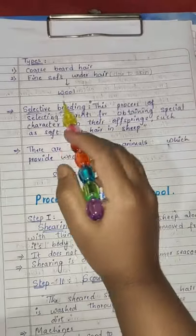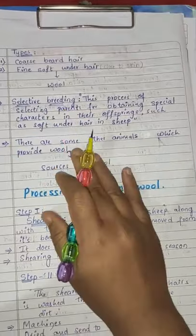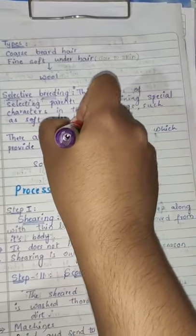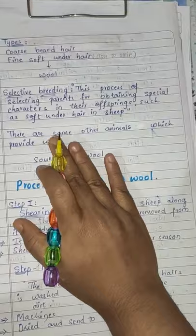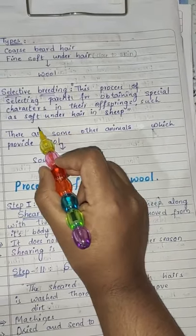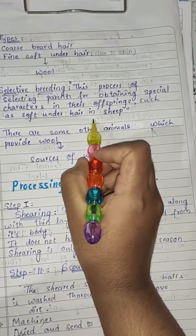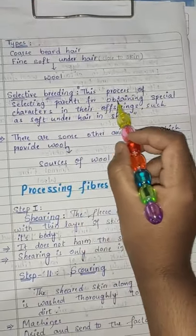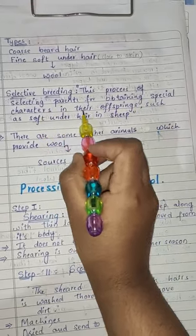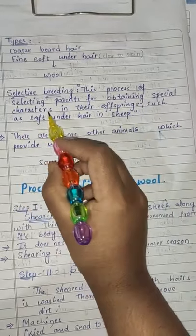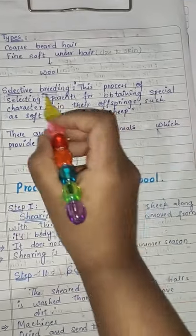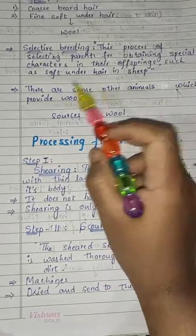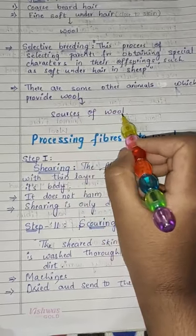Next is selective breeding. There are some breeds of sheep which have only fine under hair. If you select parents which produce only soft under hair, then they give birth to sheep which have only soft under hair. So, the process of selecting parents for obtaining special characters in their offspring — such as fine soft under hair in sheep — is called selective breeding.